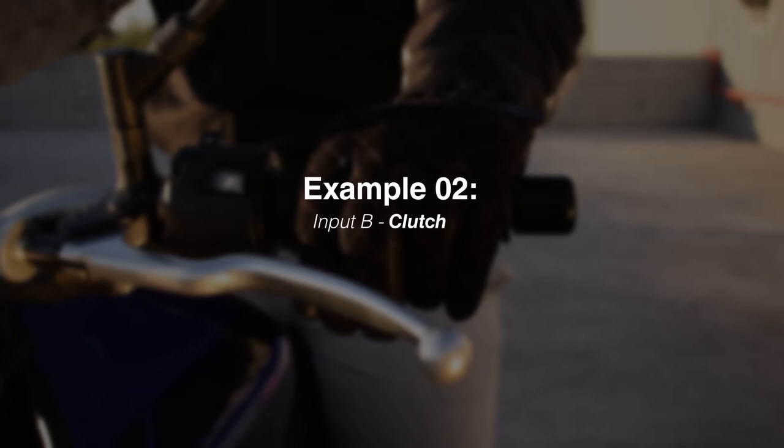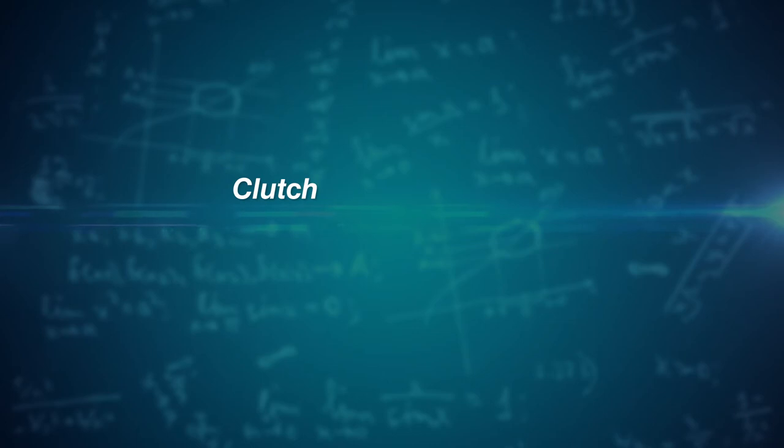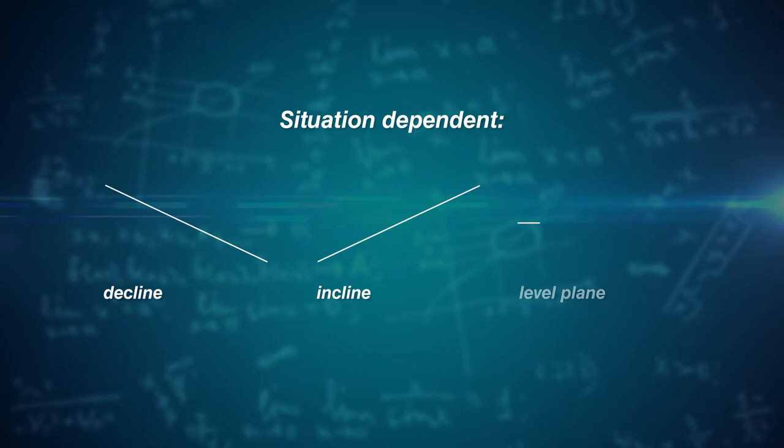Example 2. Input B. The clutch. When triggered, the output of our clutch can have various results depending on the situation. Whether it's a decline, incline, or level plane.